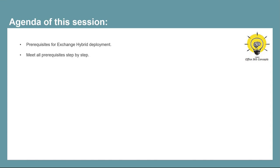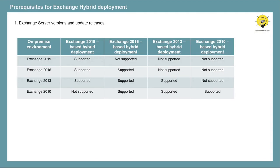The first prerequisite for Exchange Hybrid is a supported Exchange Server version and the updates. If you're running Exchange Server 2010 in your on-premise, you can use the same Exchange Server as a Hybrid Server — meaning you can deploy Exchange Hybrid using Exchange Server 2010, but it has to be Exchange Server 2010 SP3 with the latest updates.